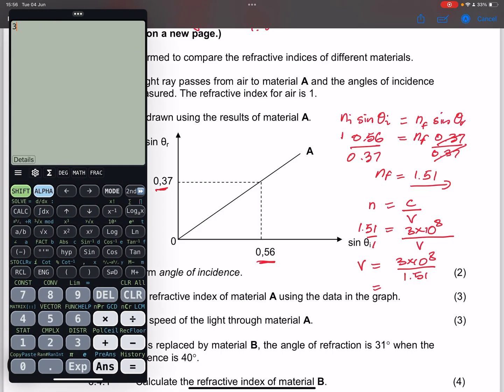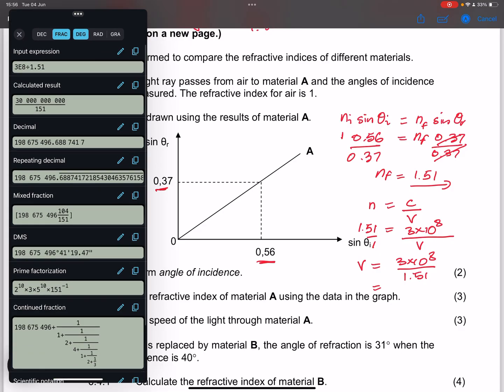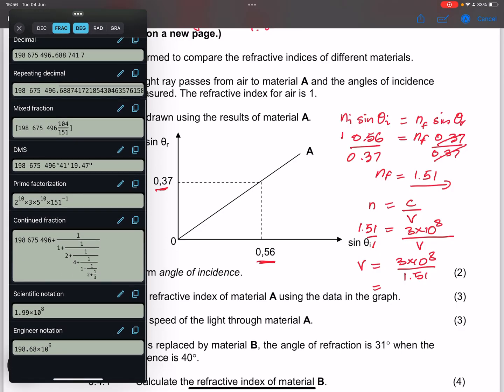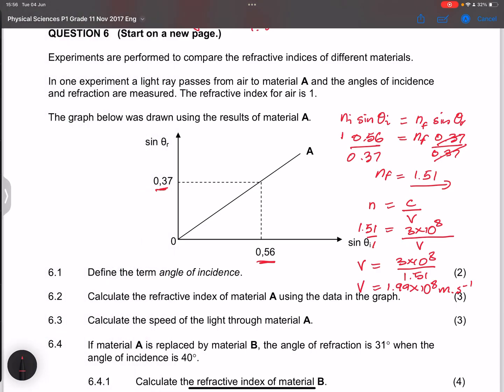And what do we get there? We'll get 3 exponent 8, divided by 1.51. And that gives me, let's write that in scientific form. That gives us 1.99 times 10 exponent 8 meters per second. And that would be the speed of light through the material A.